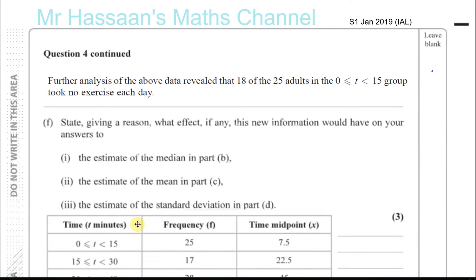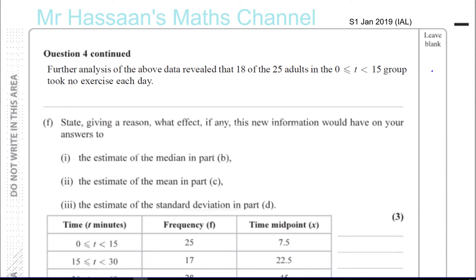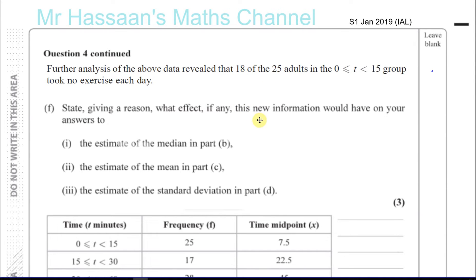Question number four, part F. Further analysis of the data revealed that 18 out of the 25 adults in the 0 to 15 group took no exercise each day. State, giving a reason, what effect, if any, this new information would have on your answers to the estimate of the median in part B, the estimate of the mean in part C, and the estimate of the standard deviation in part D.